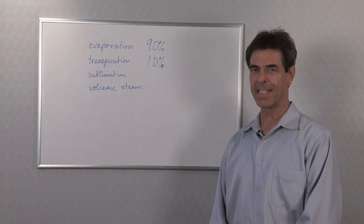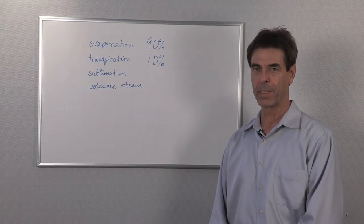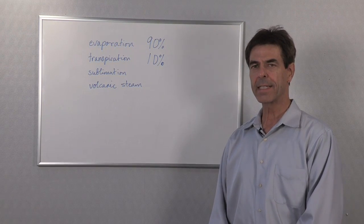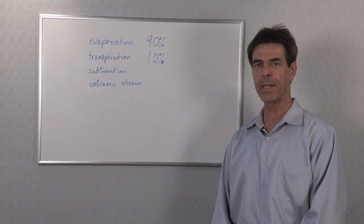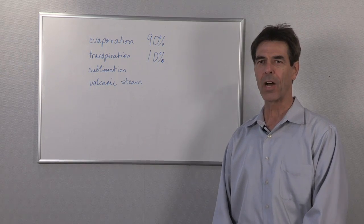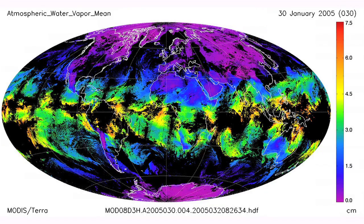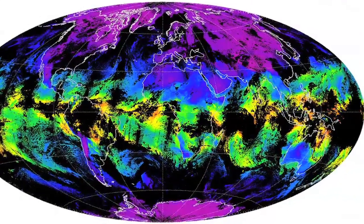The atmosphere acts as the superhighway that transports water throughout the globe, and it contains about 13 trillion metric tons of water at any one time. That may sound like a lot, but if it were to all come out of the atmosphere onto the surface of the Earth, it would cover the Earth about an inch deep.